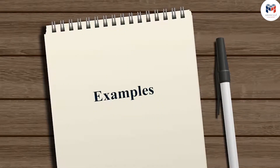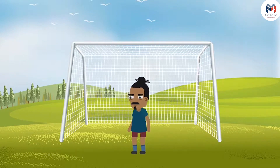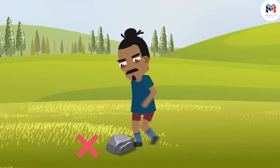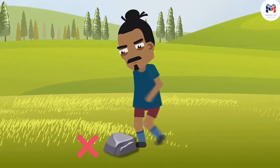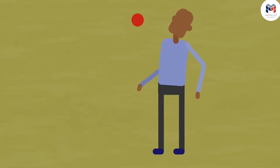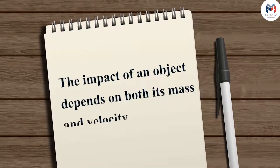Let us understand this with some examples. In a football match, when the footballer kicks a ball, the ball moves but the player does not get hurt. However, if the player were to kick a rock, the player's leg would get seriously injured. Even when a small object like a cricket ball is thrown with a high velocity, it can hurt a person. These examples suggest that the impact of an object depends on both its mass and velocity.